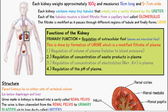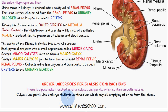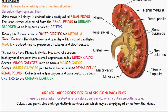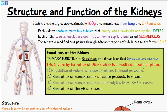The filtrate is modified as it passes through different regions of the tubule and finally forms urine. The ureter undergoes peristaltic contractions — there is a pacemaker located in the renal calyces and pelvis, which contain smooth muscle and undergo rhythmic contractions that aid in emptying urine from the kidney. The next video will cover the renal blood supply.